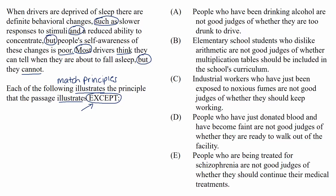Choice A: people who have been drinking alcohol are not good judges of whether they are too drunk to drive. This illustrates the same principle we saw in the passage — the alcohol is precisely the reason they can't tell if they're too drunk to drive. That's a match, so we can eliminate this choice.